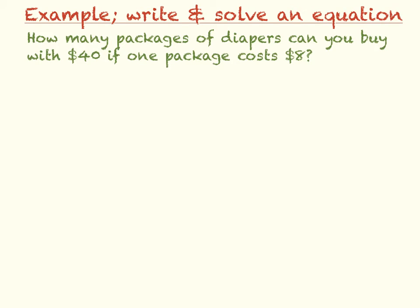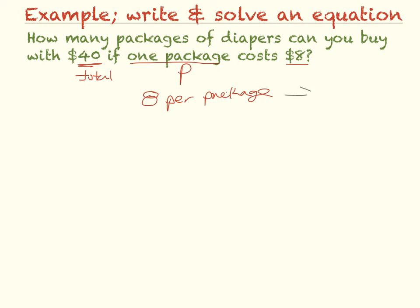Example 3. How many packages of diapers can you buy with $40 if one package costs $8? We have $40 total, and one package is $8. So for every package that we buy, it's $8 per package. How I would write that would be 8 times the number of packages I buy, and that's going to equal the total. So I have 8 times P equals my total, and my total is $40.